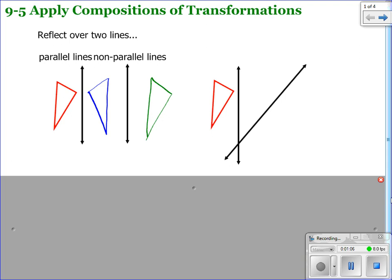So that's with parallel lines. Let's look at what happens when the two reflecting lines are not parallel. We're going to do the same thing. The first step is just to reflect this over the first line. And then we're going to take that blue triangle and reflect it over the second line. So it's going to look something like this.